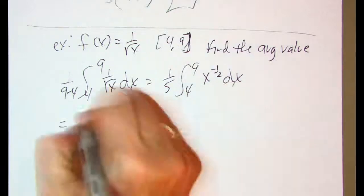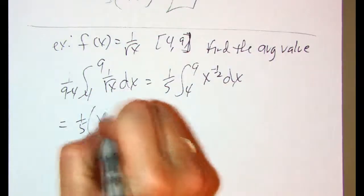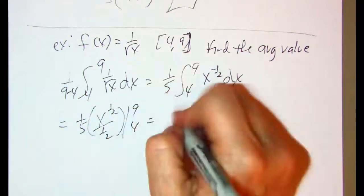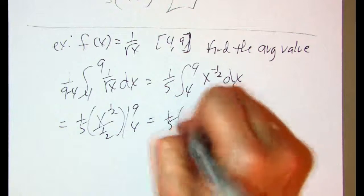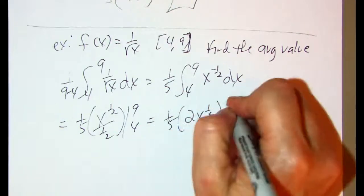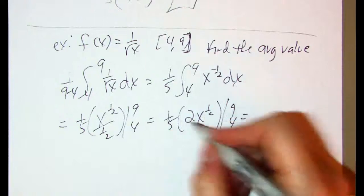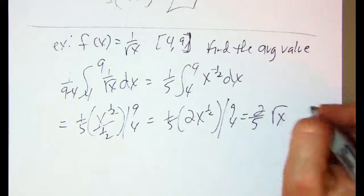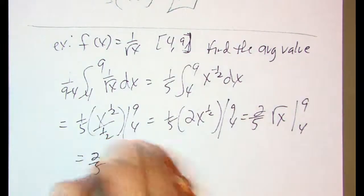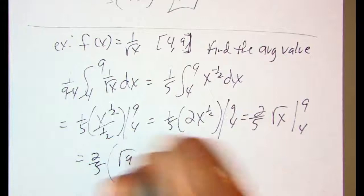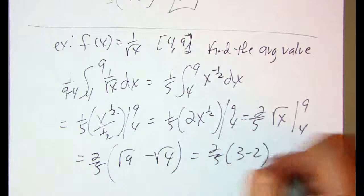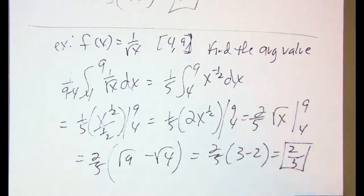Now I'm ready to go ahead and integrate that. So I'm going to take out my 1 fifth. So that's x. Increase that by 1 over 1 half. And that is from 9 to 4. I'll clean this up just a little bit more. So that's really times 2x to the 1 half power. And again, let's do 2 fifths. And that's really then the square root of x. From 9 to 4. Let's see what we get here. So there's 2 fifths. So the square root of 9. Minus the square root of 4. 3 minus 2. So it's just that 2 fifths. That would be the average value.